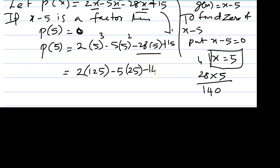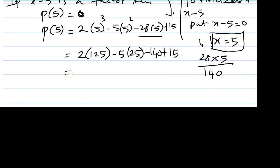Then minus 140 plus 15. Now, P(5) equals 2 times 125 minus 5 times 25 minus 140 plus 15, which equals 250 minus 125 minus 140 plus 15.